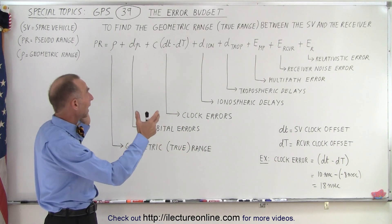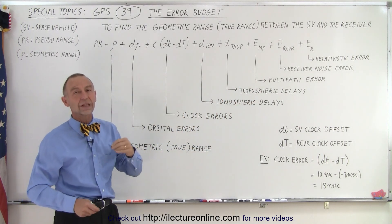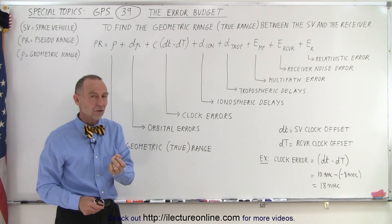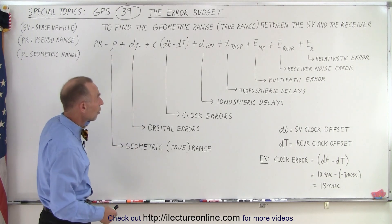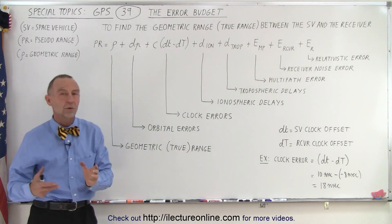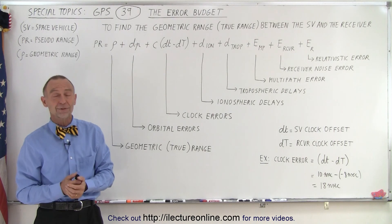This is what we call the error budget. We have to calculate all these various influences to the calculation of finding the range. In order to find the true range, what we call the geometric range, we have to calculate all those and subtract them from the pseudo-range. And that is how it's done.